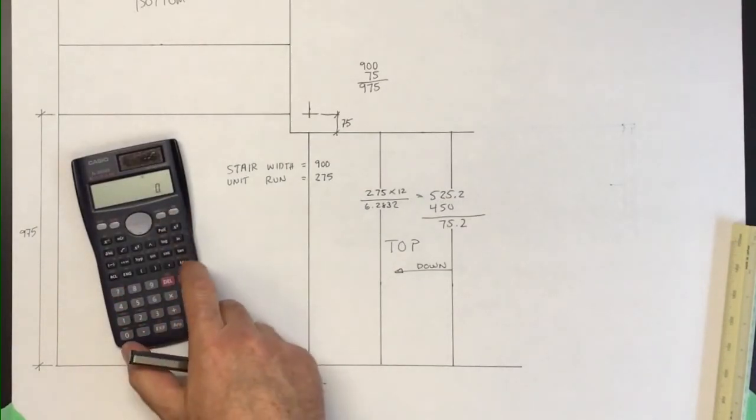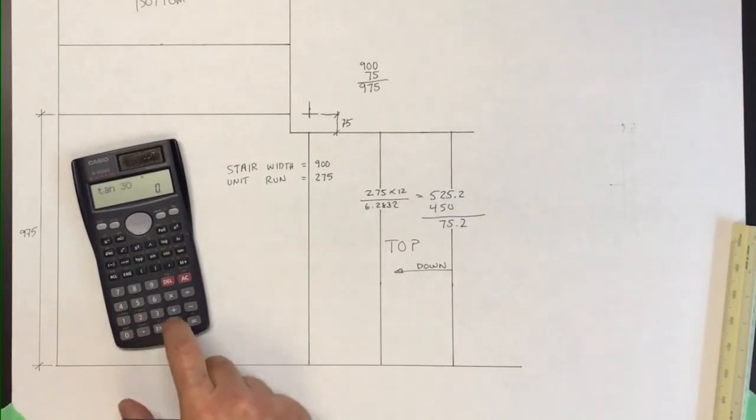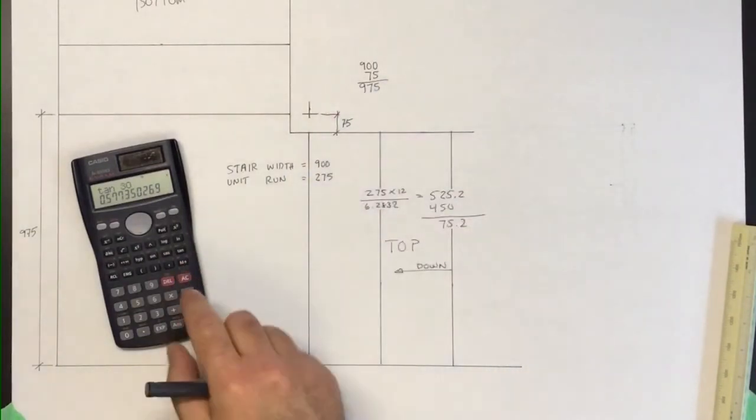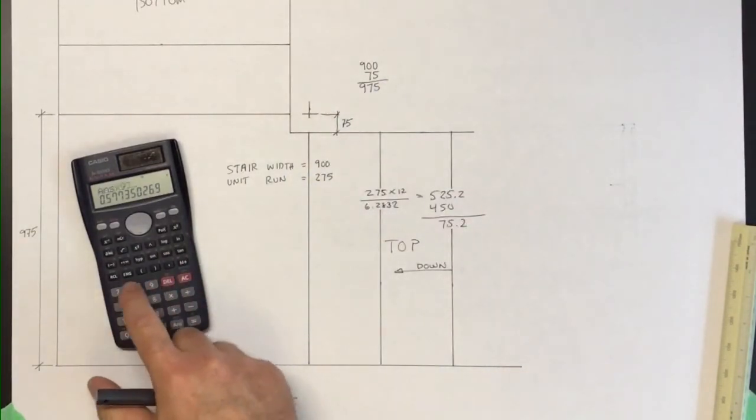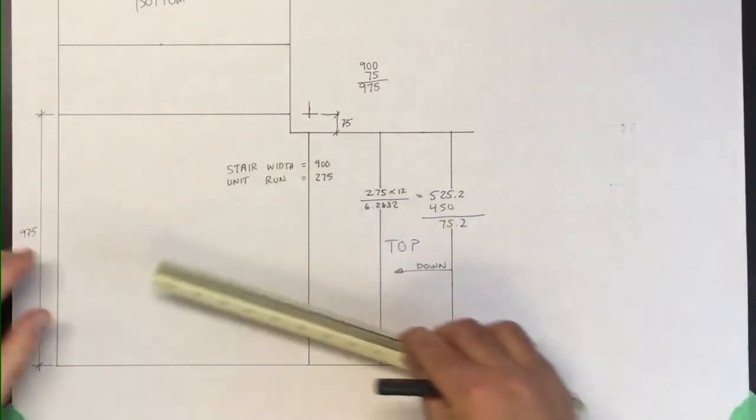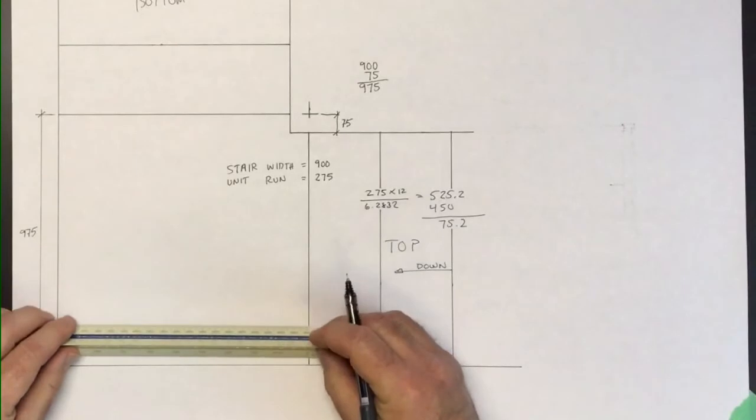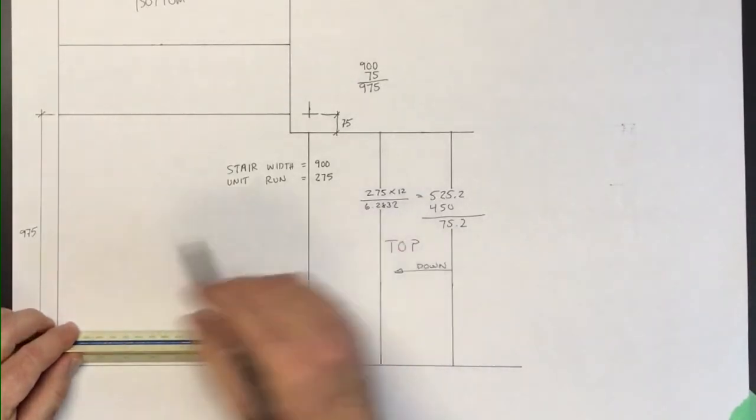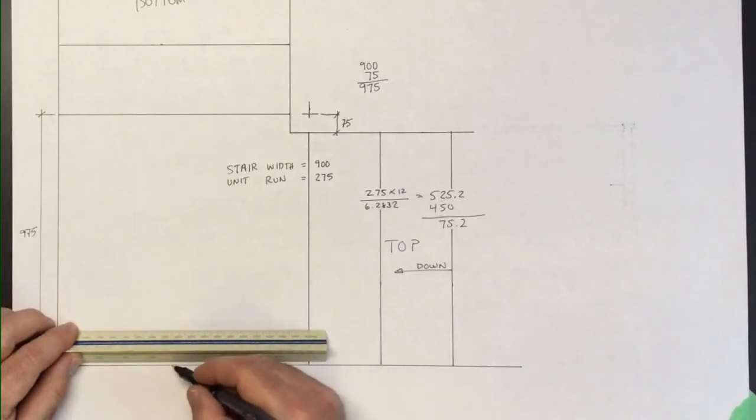When you take the tangent of 30 degrees, it comes up with that decimal place. If I just take that and multiply it by the width of the landing, times 975, I'll end up with 563. And so again at 1 to 5, you'll be doing this at 1 to 1. I will lay out 563 millimeters right about there.